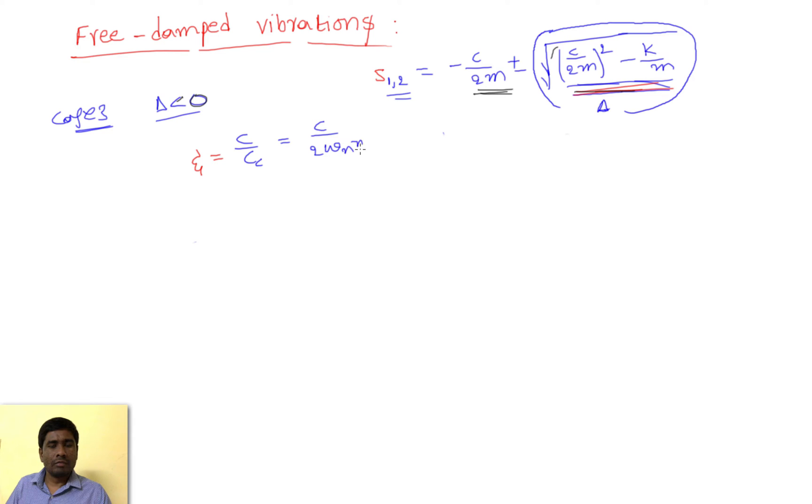From this equation, we can write c by 2m equals xi into omega n, because we want to substitute this value in both places. We also know k by m equals omega n squared. When I substitute these two values, since this is negative one, the sign will change, so this term will come here and this term will come here.